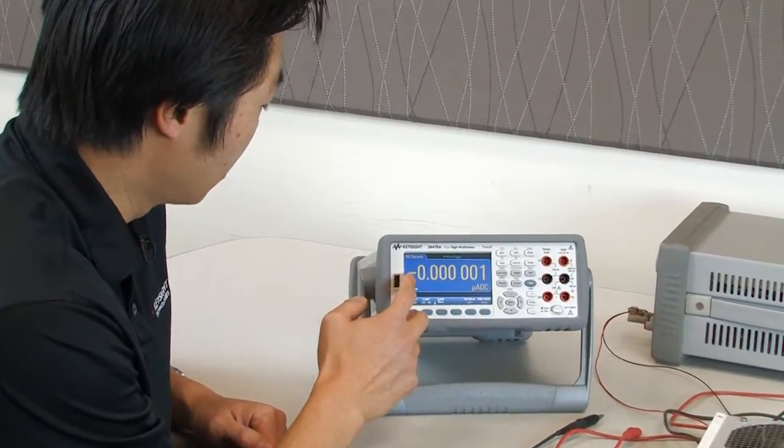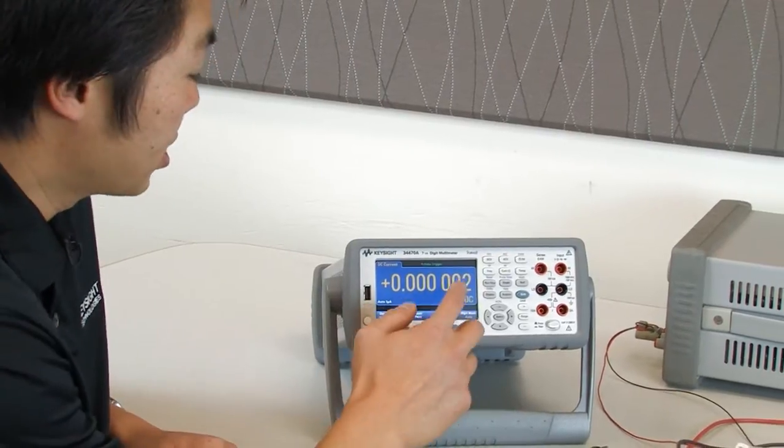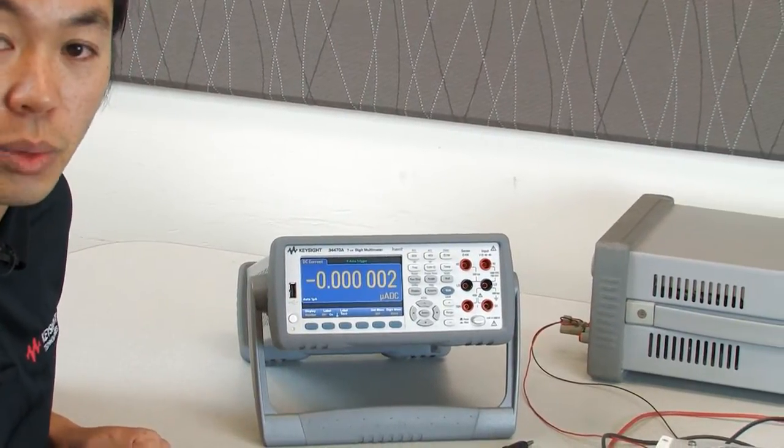So here we have 1 microamps, this would be nanoamps, and in this region would be the picoamp, so you can actually see resolution down in the 1 picoamps.